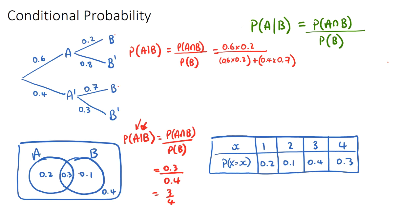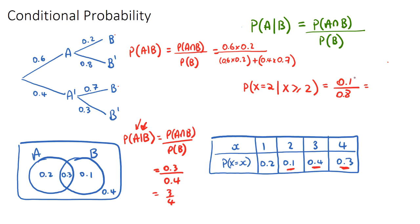In the third type of question, with a probability table, if the question says find the probability that x equals 2 given that x is greater than or equal to 2, we use the same formula. The intersection — when x equals 2 and x is greater than or equal to 2 — is just when x equals 2, so the numerator is 0.1. The denominator is the probability that x is greater than or equal to 2, which is this plus this plus this, giving 0.8. So we get 0.1 divided by 0.8, and you can compute that on your calculator.